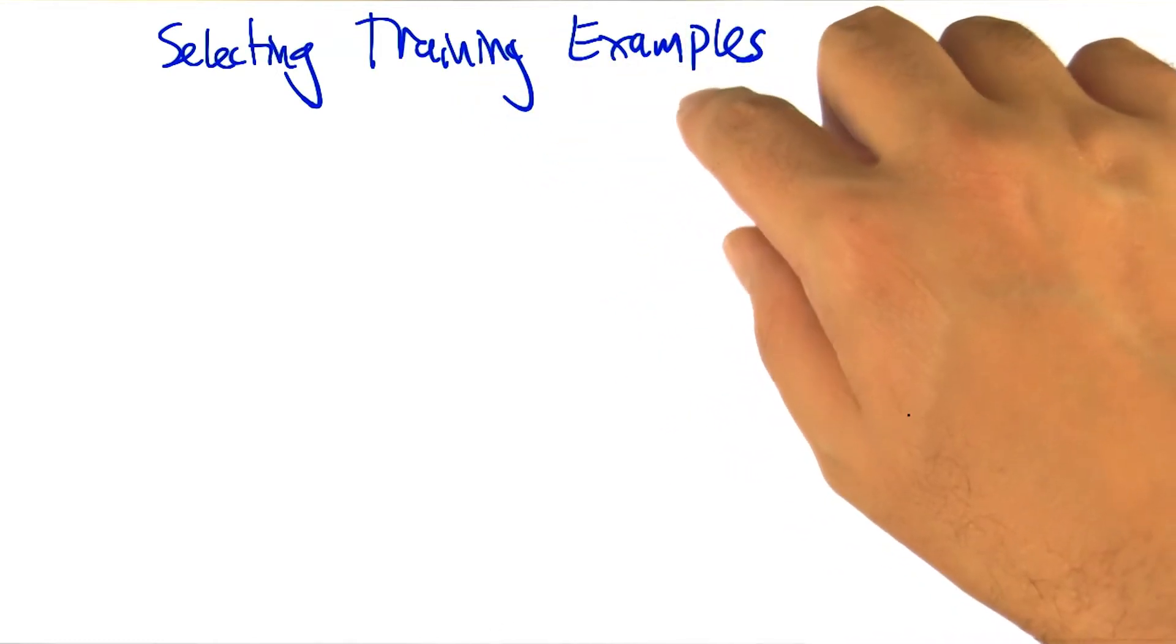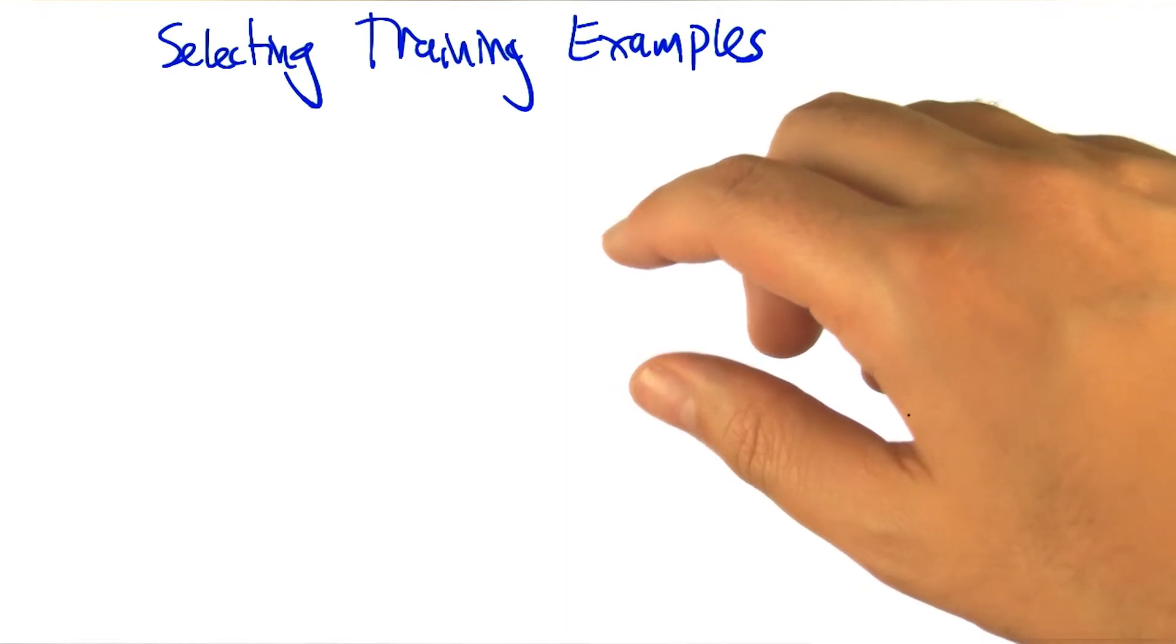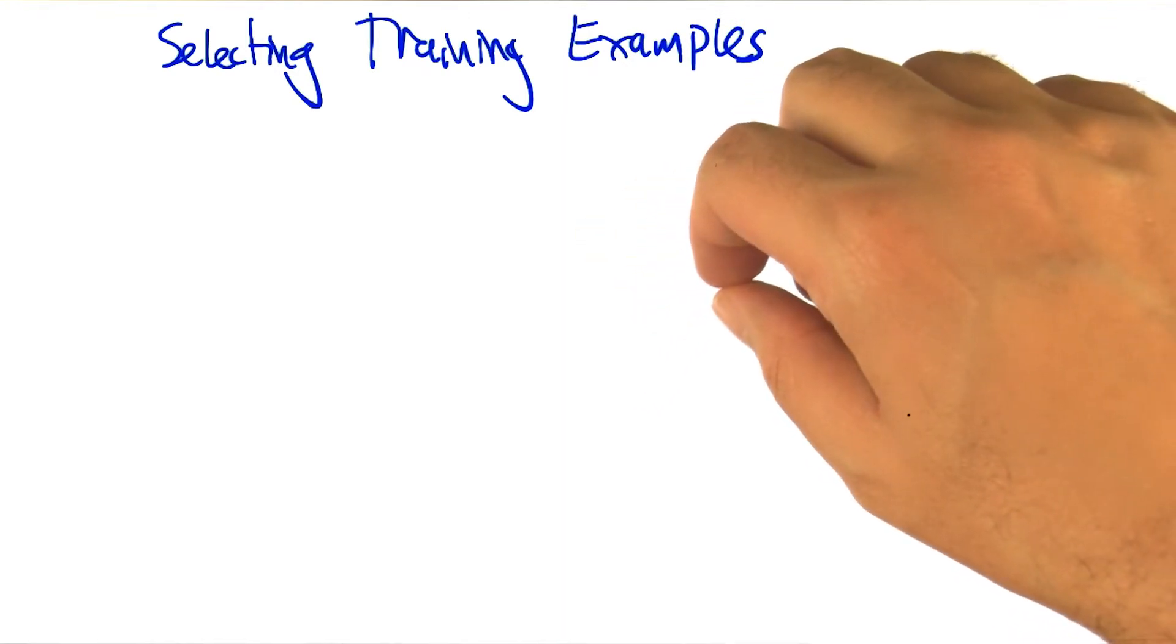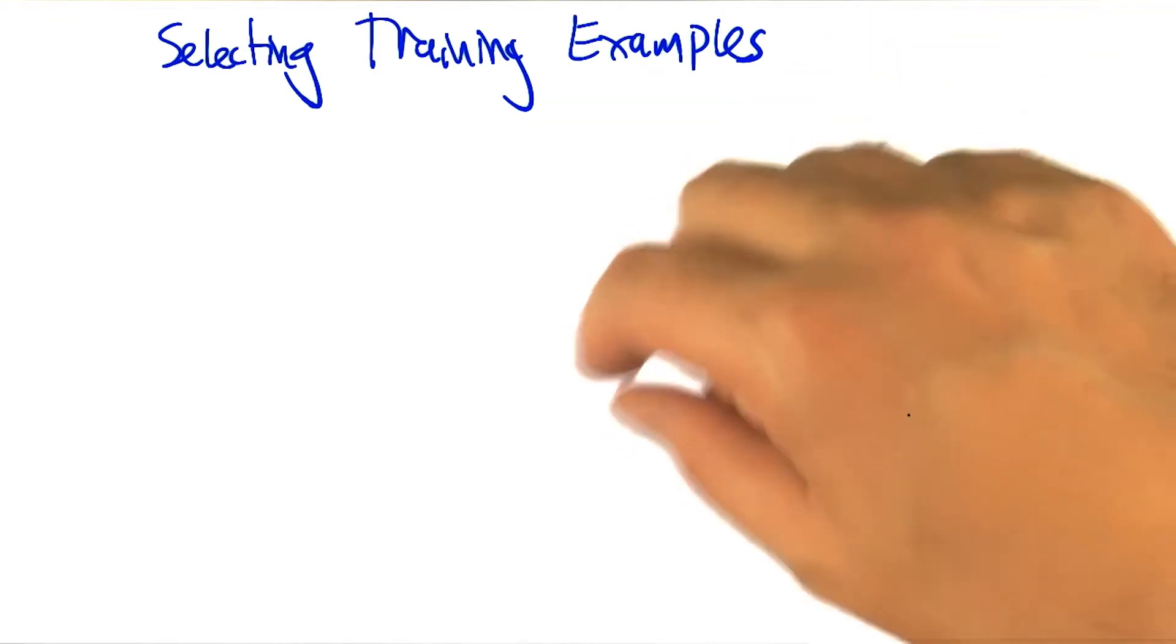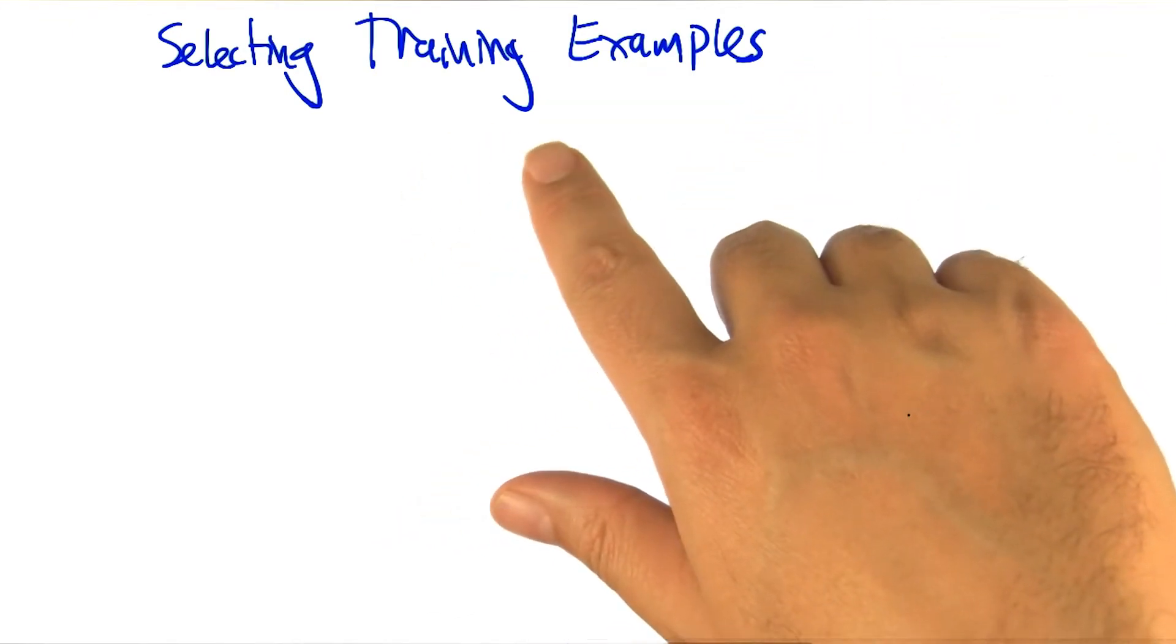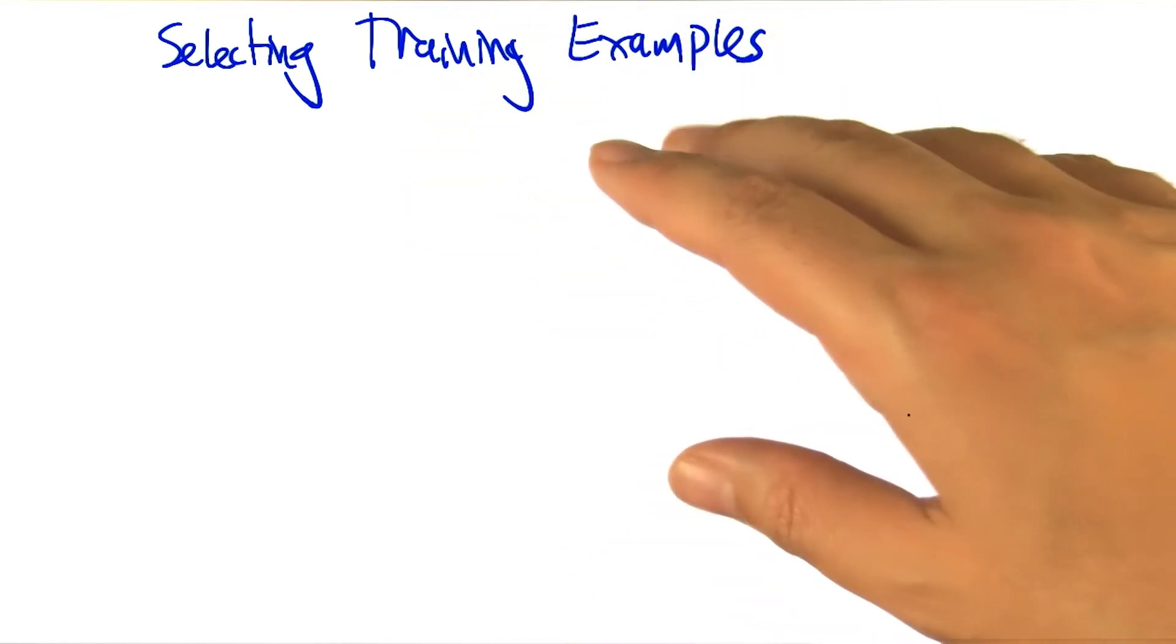All right, so it turns out it matters how we select training examples when a learner is needing to learn. So let's at least articulate some various ways that training examples could be selected, and then for each one we might end up with a different answer as to how much training data is going to be needed if the training examples are selected in that particular way.